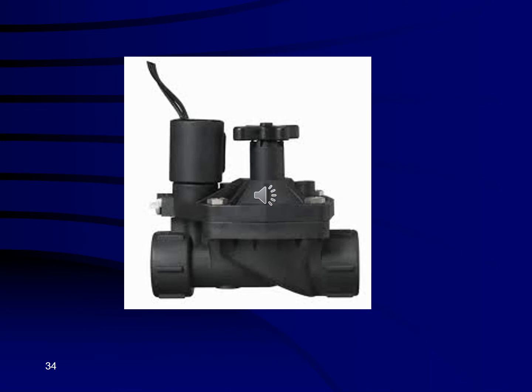Here's what a typical landscape valve looks like: water comes in from the left, passes through a solenoid on top — which electrically opens and closes the valve — then through a regulator in the middle, and out to the right, going to the PVC and poly pipe that delivers water to where you want it.